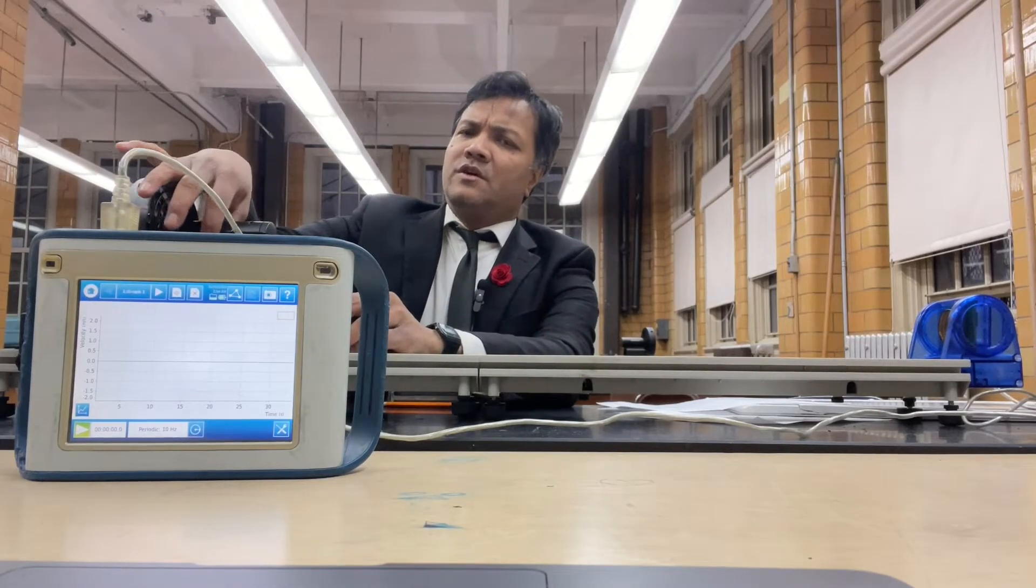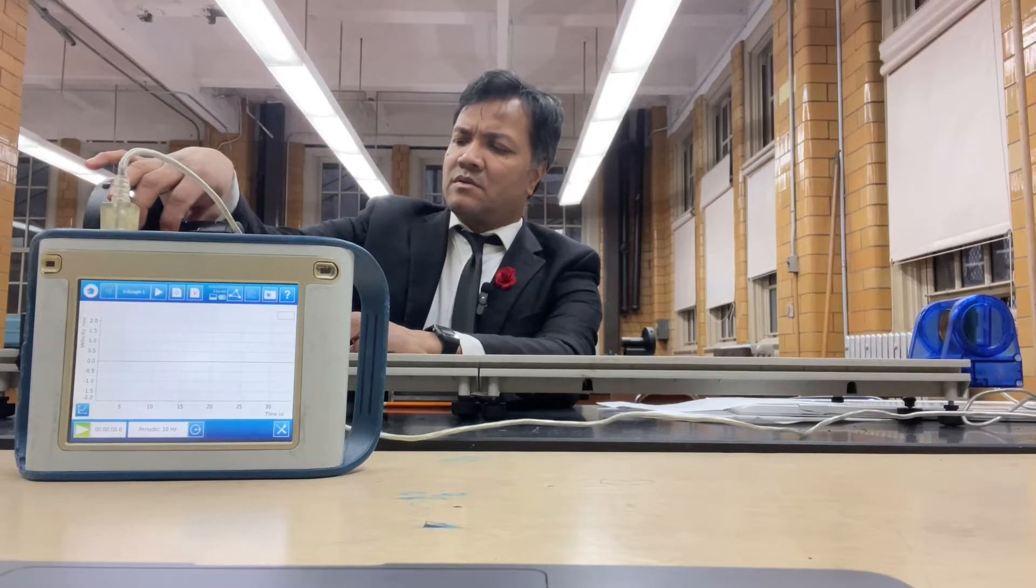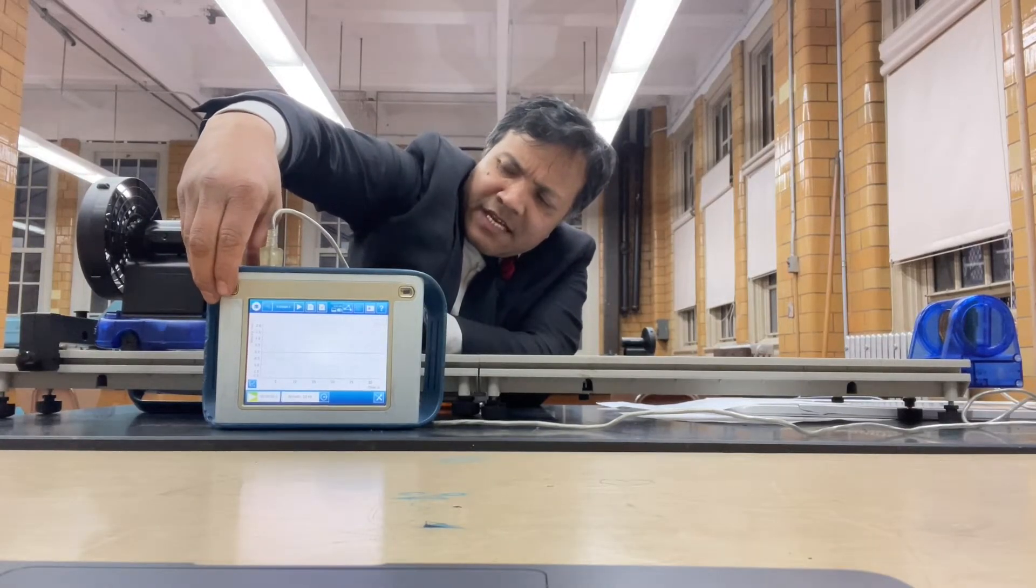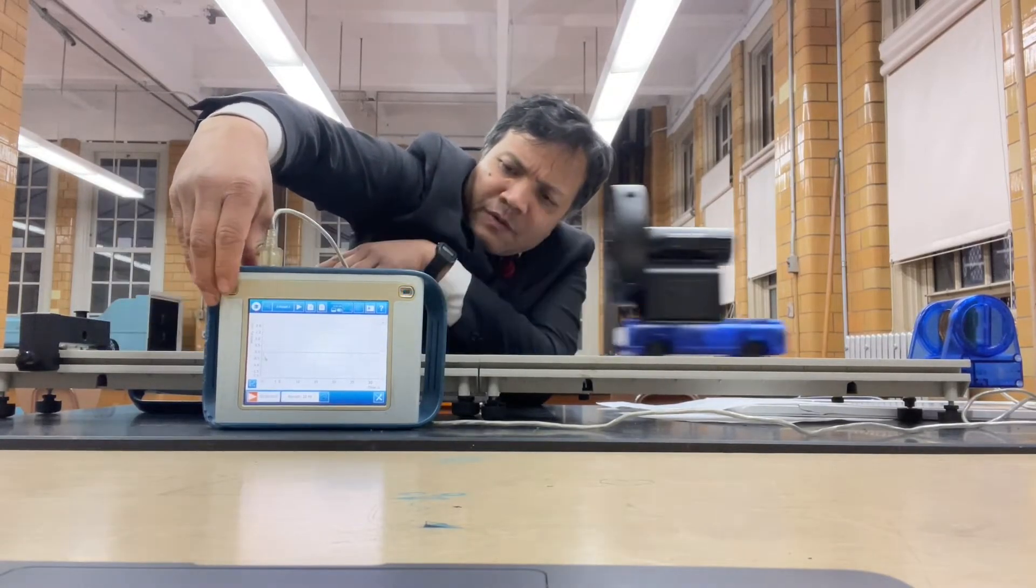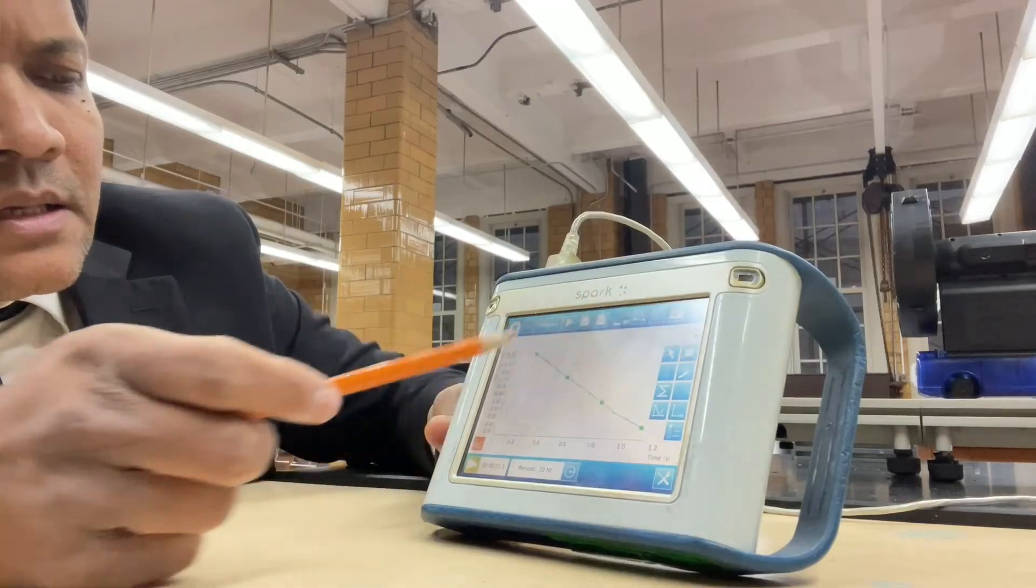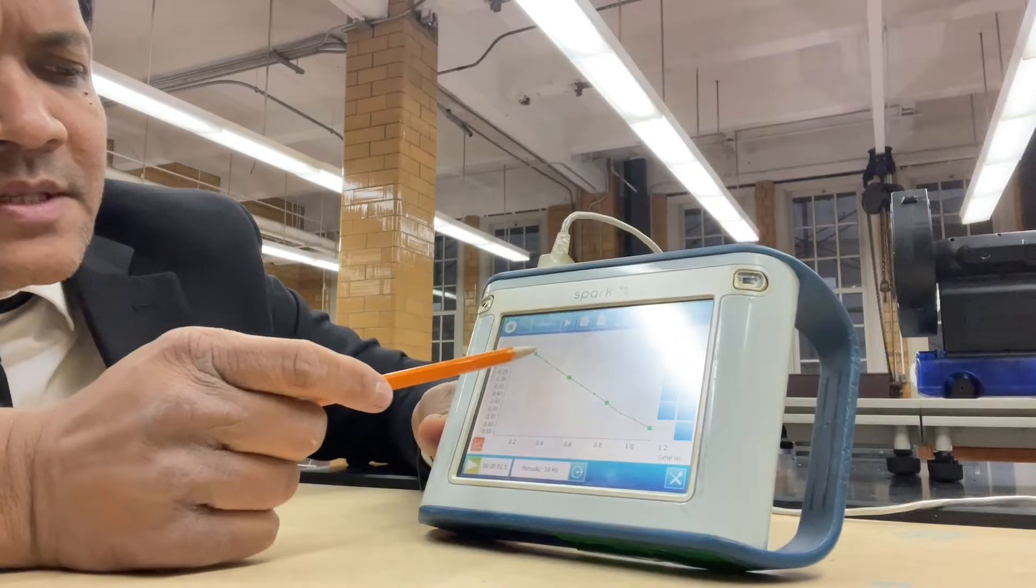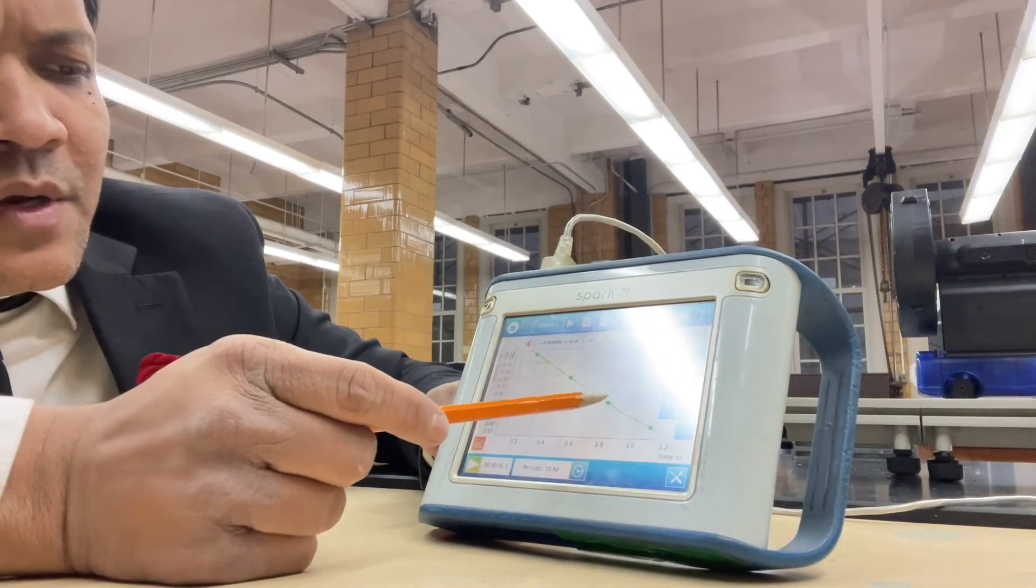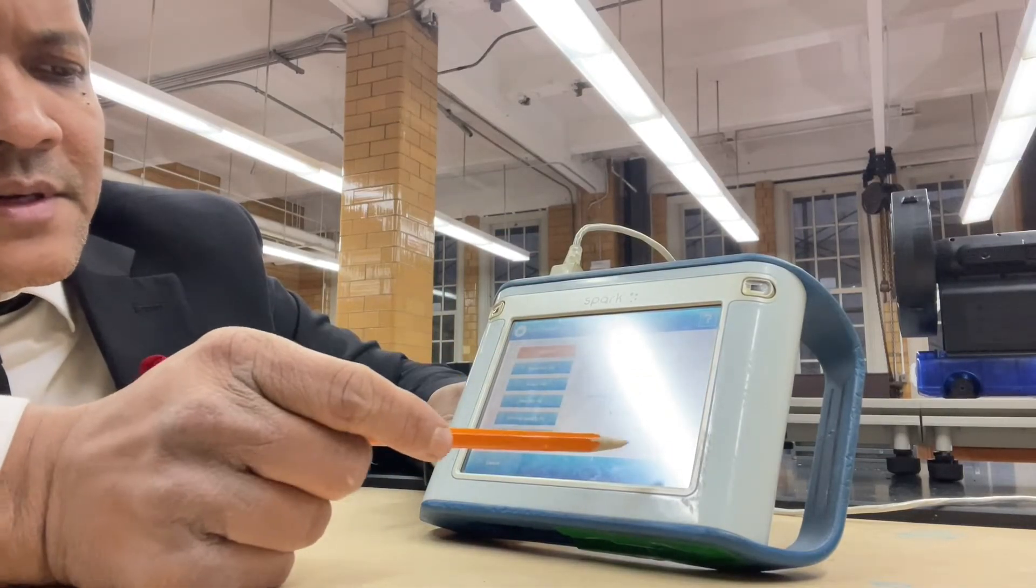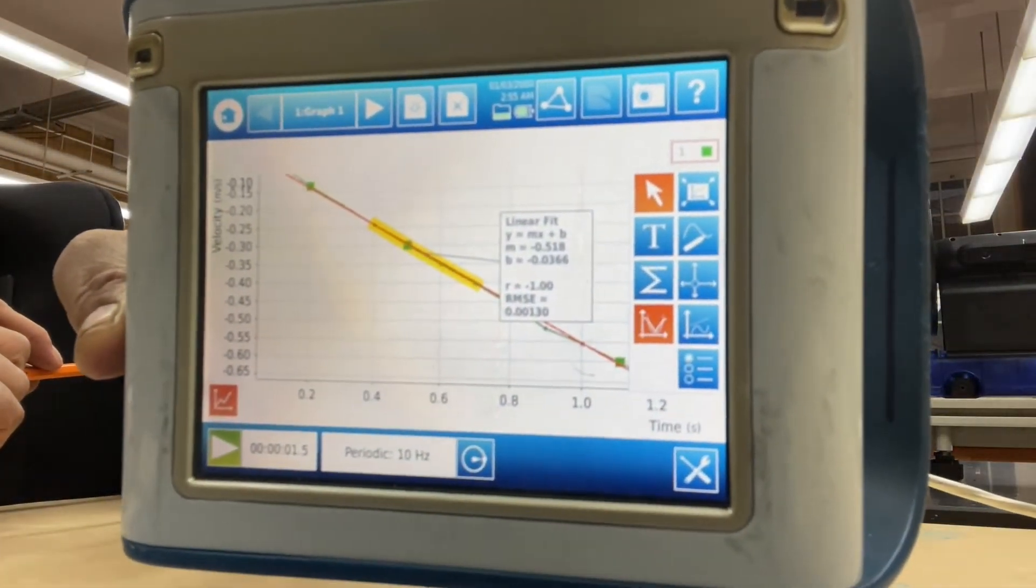So the fan cart is now ready to move. I'm going to turn it on to the maximum speed. Ready, set, go. I'm going to turn it off. I'm going to take the acceleration of this. Acceleration, we're going to quickly choose two points. Now, go here, linear fit. And then the acceleration would be right here. M is equal.